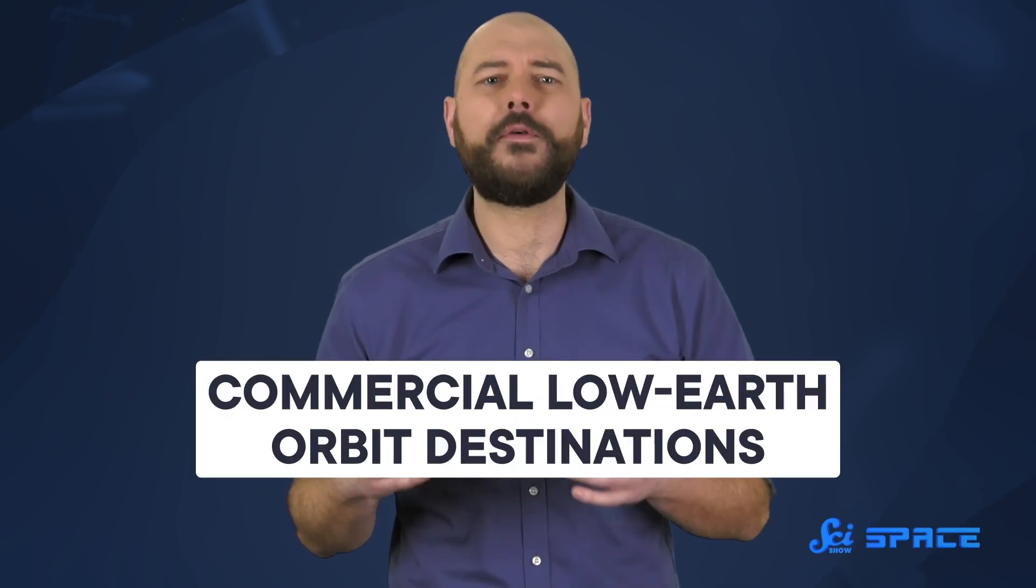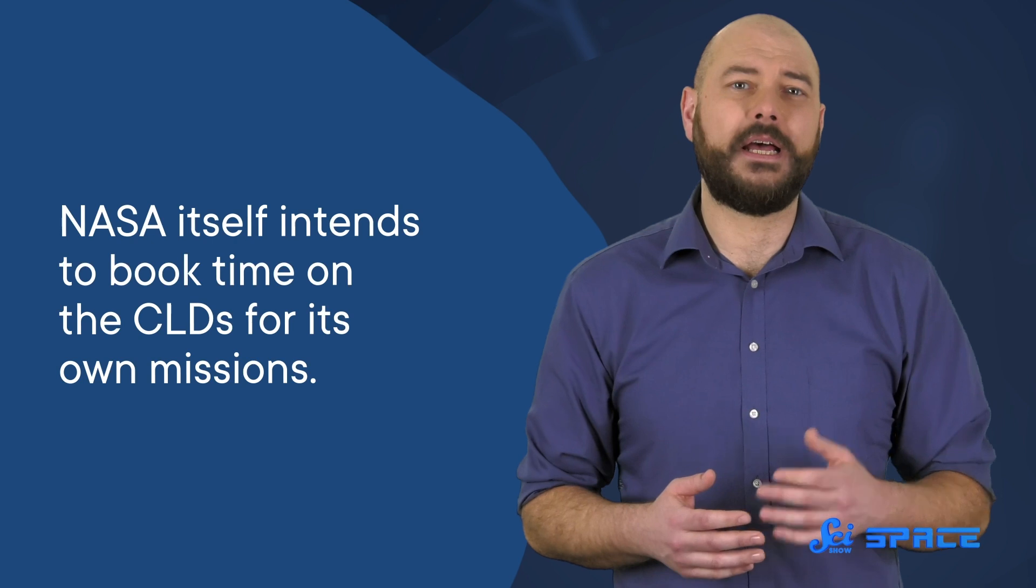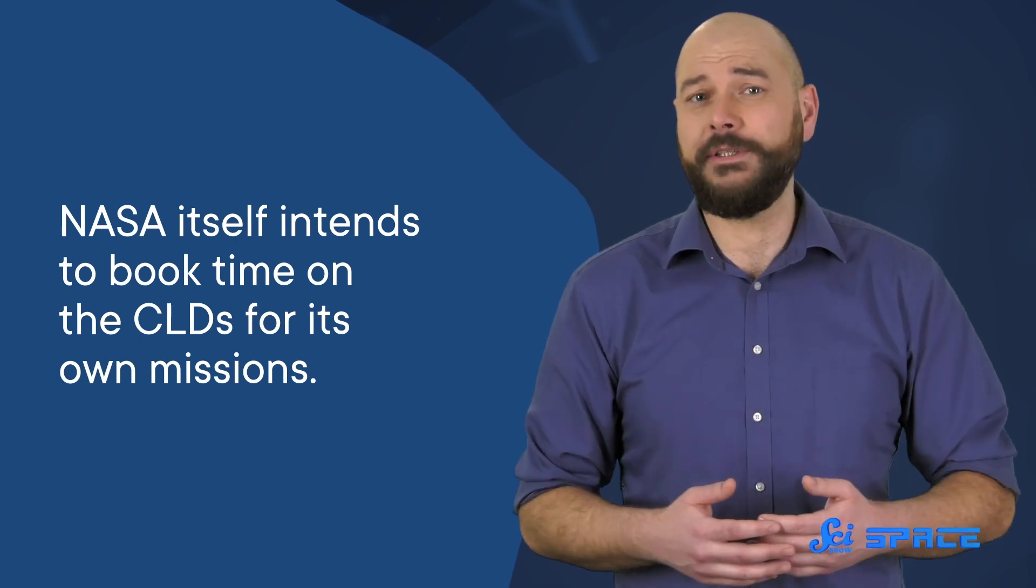Losing the International Space Station will be a sad day for space research, but one of the reasons NASA wants to wait until 2030 is to allow something else to be developed that can take its place. The agency plans to transition from a single station run by international governments to several so-called commercial low-Earth orbit destinations, or CLDs. In other words, orbiting platforms owned and run by private companies. NASA itself intends to book time on the CLDs for its own missions.